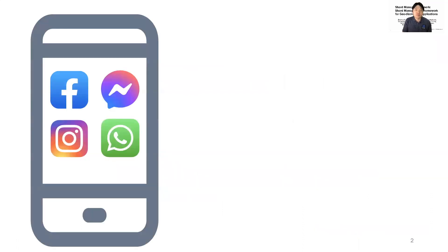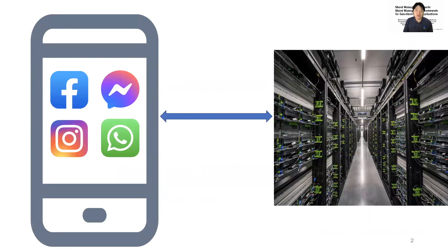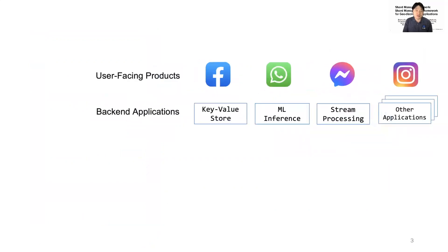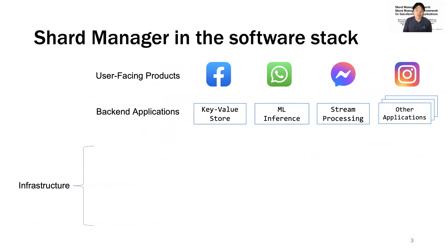Facebook provides some of the most popular social apps that offer rich functionality and are used by billions of users every day. Given its scale and diversity in function, supporting these products requires highly scalable and sophisticated backend services running on many data centers, such as key-value stores, ML inference, stream processing, and database systems. Operating these backend services in a data center environment requires solving common setup problems, and therefore we have deployed layers of unified software infrastructure stack to address those problems.